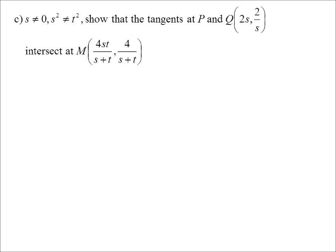Hmm. S can't equal zero. That makes sense, because if you have a look at the point Q, S is on the bottom of a fraction, so it can't be zero. S squared does not equal T squared. What's that mean? Well, remember, P was 2T, 2 on T, so we're saying P and Q can't be the same point, but it's also saying they can't be diagonally opposite. We're going to show that the tangents of these two points intersect at 4ST on S plus T, 4 over S plus T.